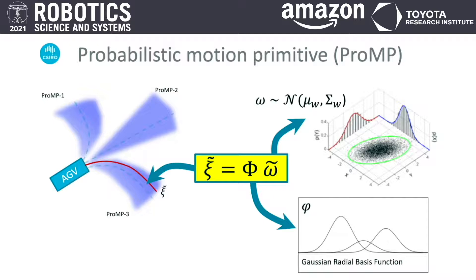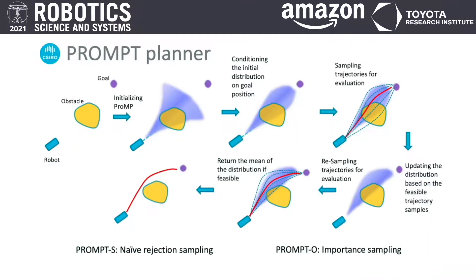This makes it feasible to utilize locally adapted motion primitives, improving the performance as well as success rate of trajectory optimization. We present two algorithms: PROMPT-S, which uses naive rejection sampling on the conditional distribution, and PROMPT-O, which performs stochastic optimization using importance sampling on the conditional distribution.